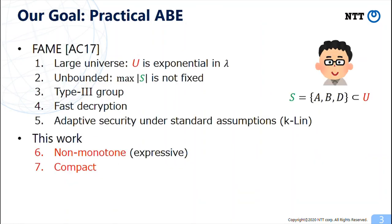Our goal in this work is to construct practical ABE schemes. Recently, Agrawal and Chase proposed practical ABE schemes called FAME, which satisfies properties 1 to 5. Briefly, in their scheme, the attribute universe size is exponentially large.